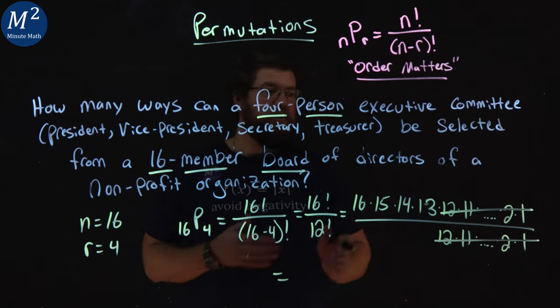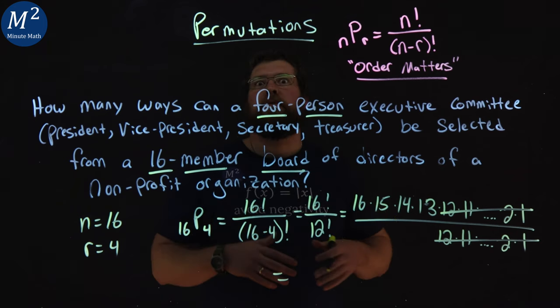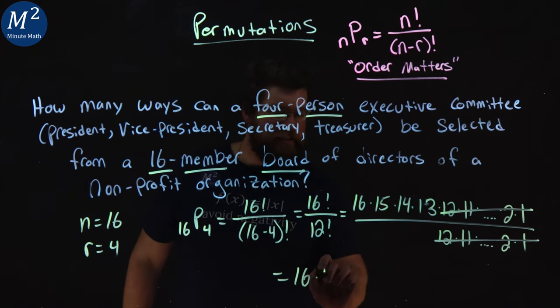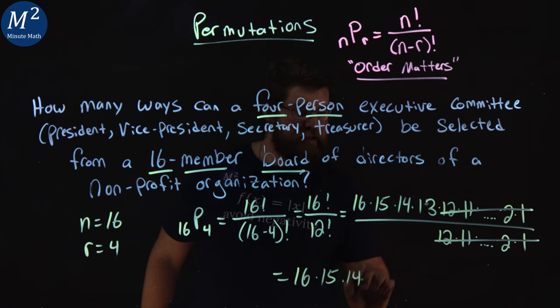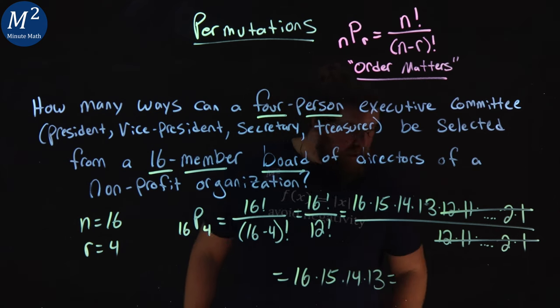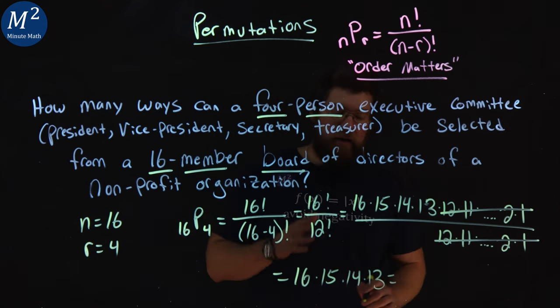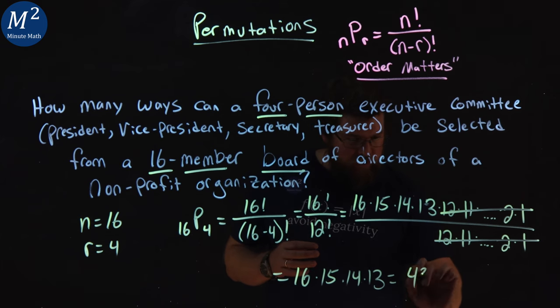So now you have 16 times 15 times 14 times 13, and if we multiply that out, we have 43,680.